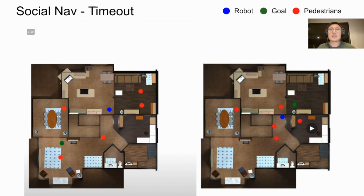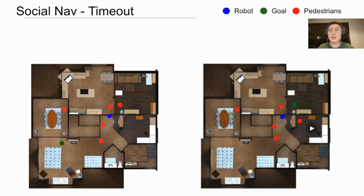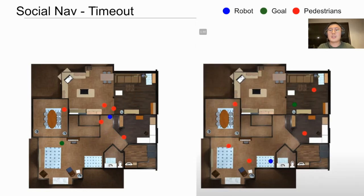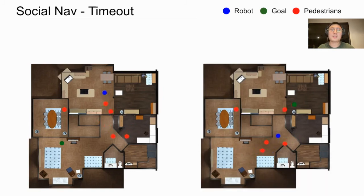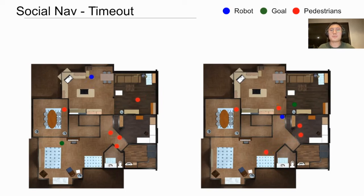The next two failure cases are due to timeout. In the first episode, the agent didn't know what to do around many pedestrians in the hallway and decided to take the wrong turn into the wrong room. In the second episode, the agent was forced onto the wall by a pedestrian it was trying to avoid, got stuck there, and wasn't able to take a right turn from that position.